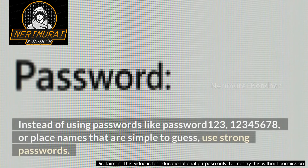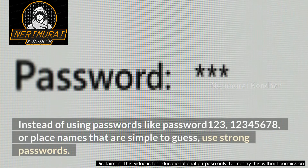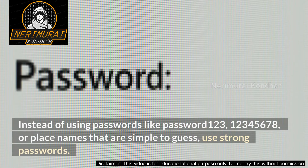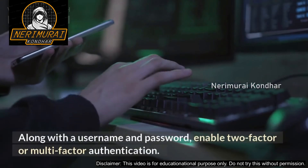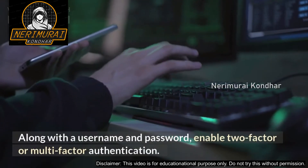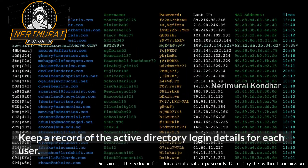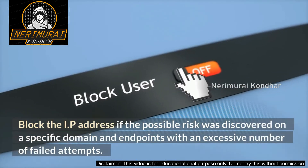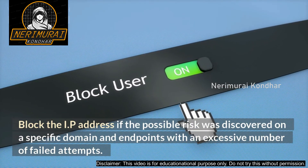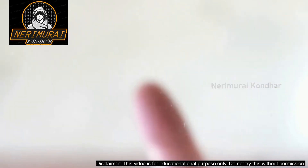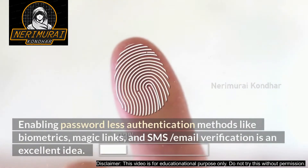To mitigate this type of threat: instead of using passwords like 'password123', '12345678', or simple place names, use strong passwords along with a username. Enable two-factor or multi-factor authentication. Keep a record of Active Directory login details for each user, and block the IP address if a possible risk is discovered on a specific domain or endpoint with an excessive number of failed attempts.